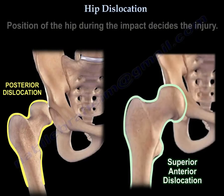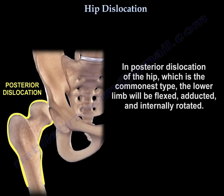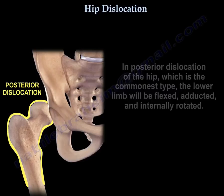The position of the hip during the impact decides the injury. In posterior dislocation of the hip, which is the common type, the lower limb will be flexed, abducted, and internally rotated.